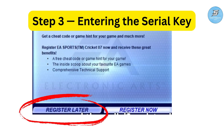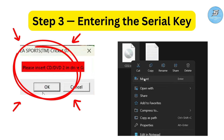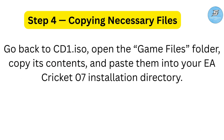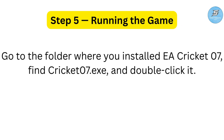Click continue and choose 'Register Later.' The installation will now begin. When prompted to insert CD or DVD 2, simply mount CD2 and click OK to continue. Step 4: copy necessary files. Open the installed game folder, go back to CD1, open the game files folder, copy its contents, and paste them into your EA Cricket 07 installation directory. This step helps fix common startup errors.